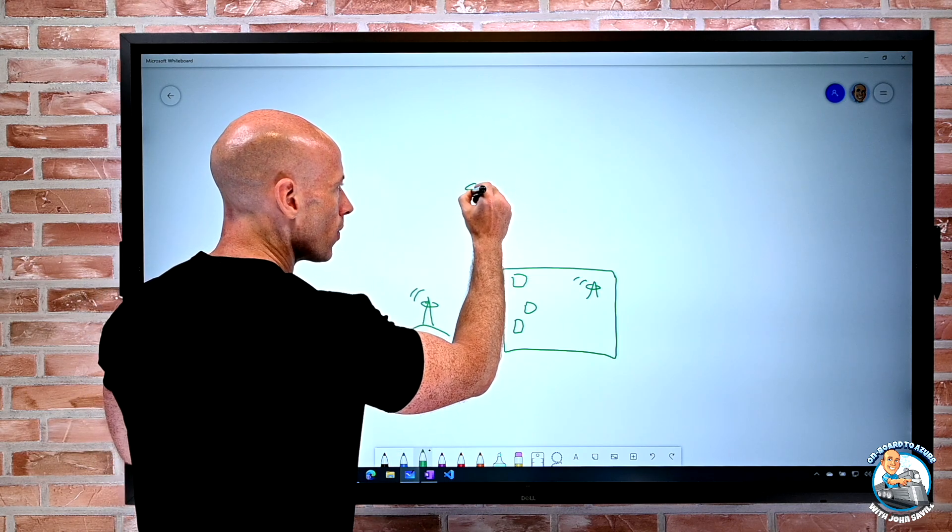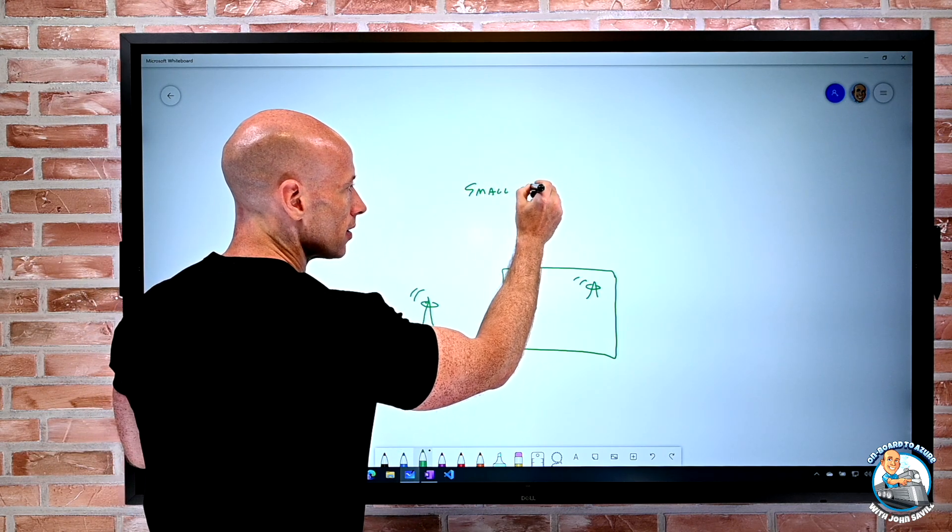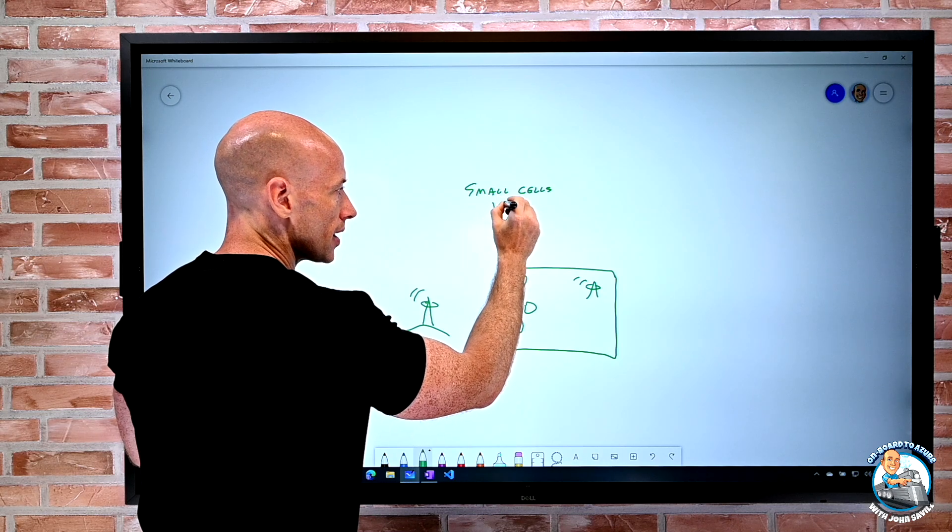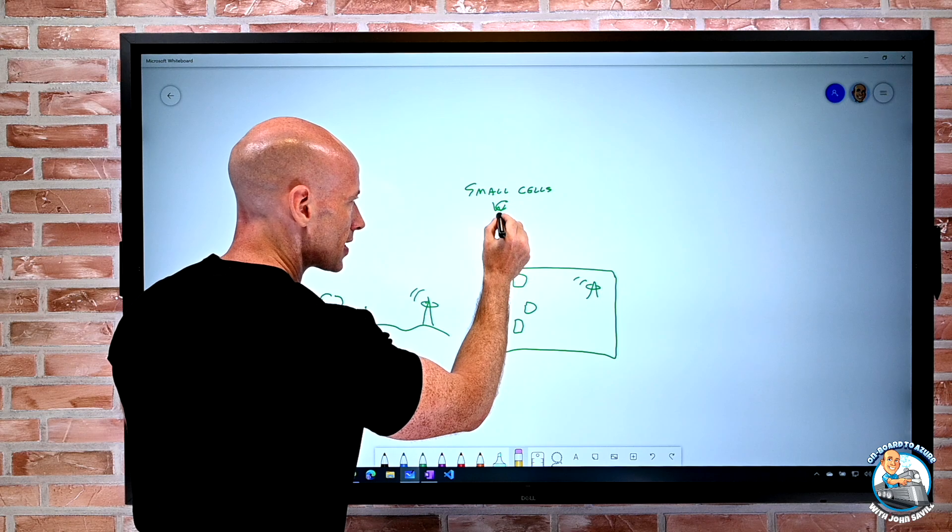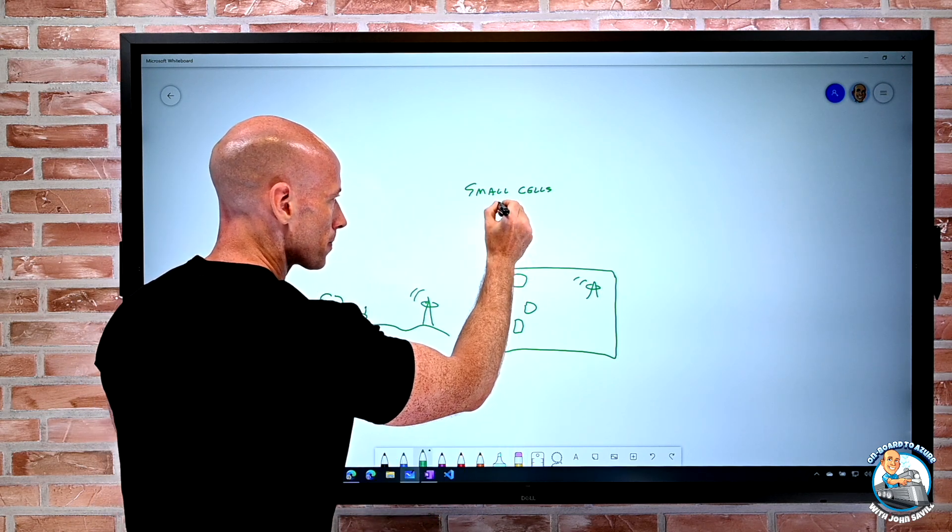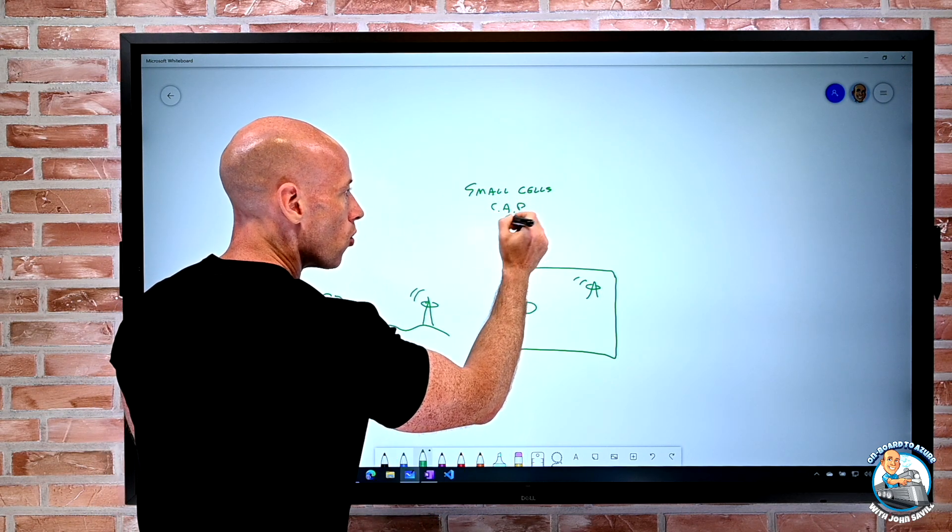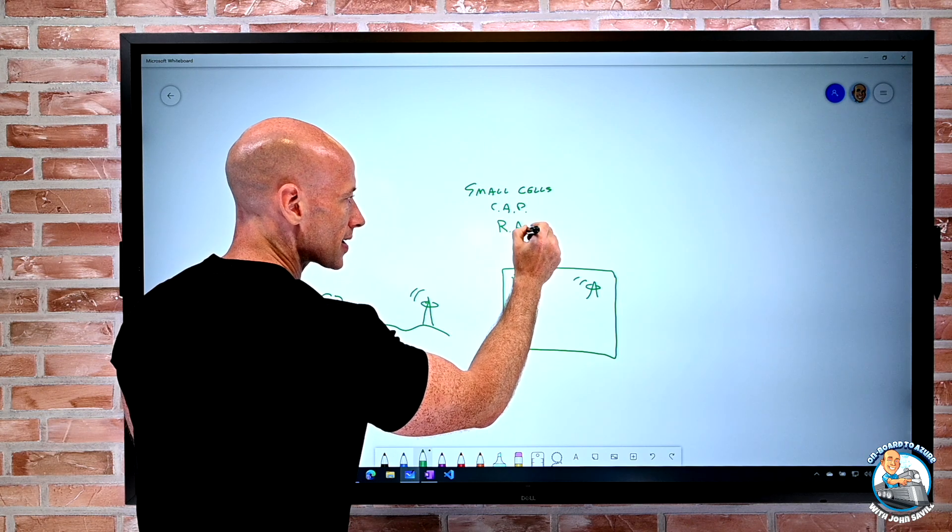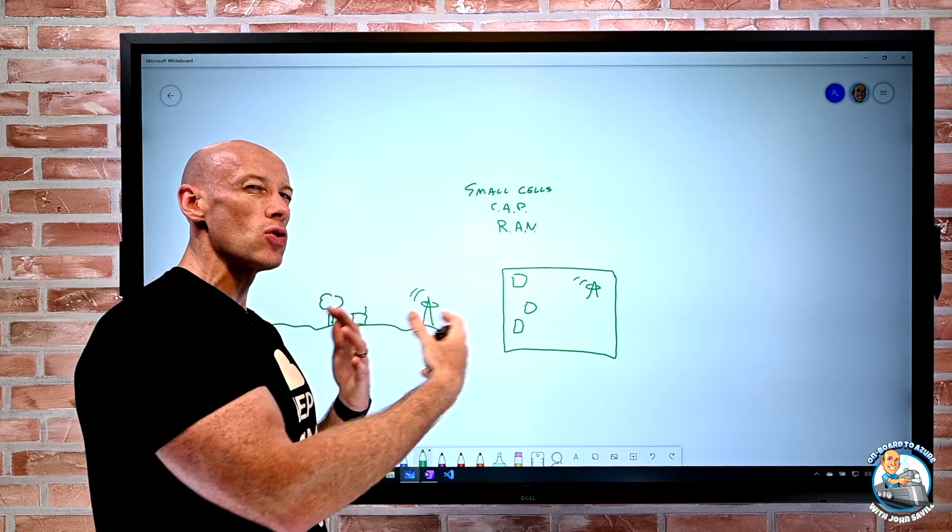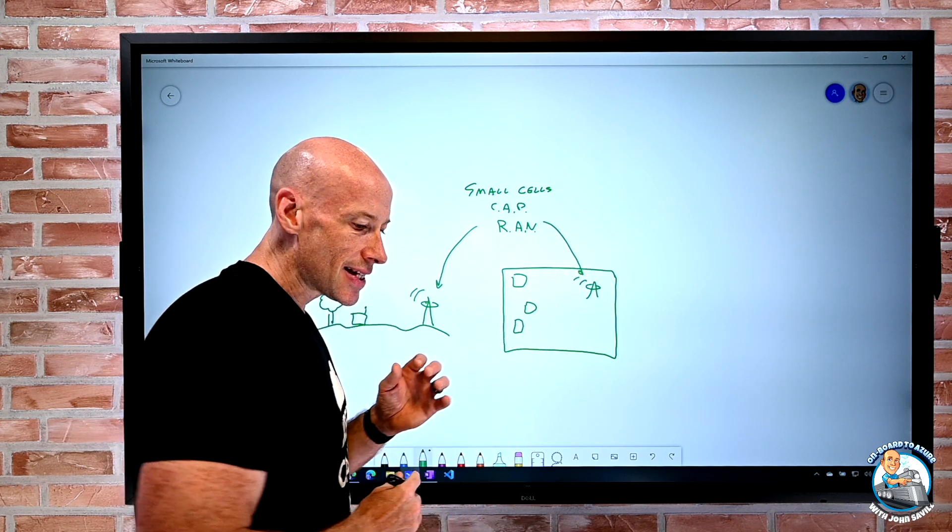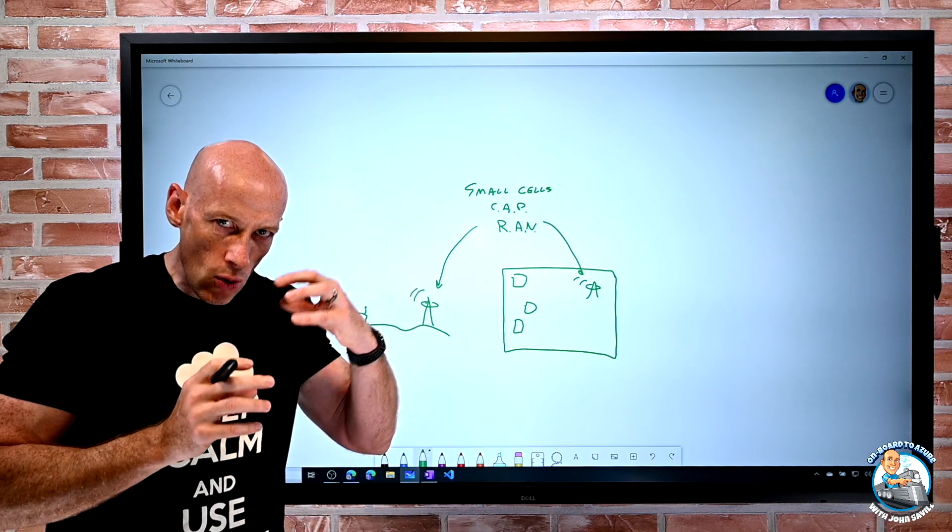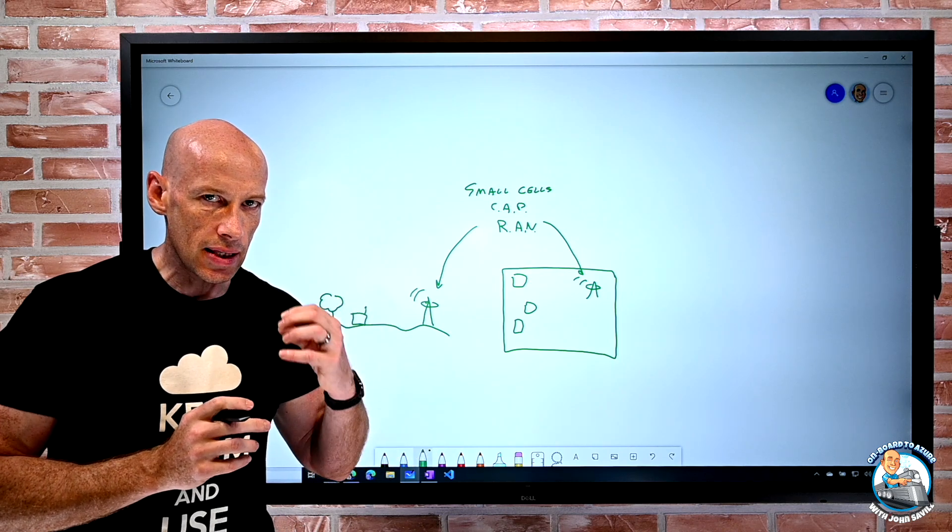So we can think about we have these small cells, you might call them the cellular access points, or again the radio access networks. They're all used interchangeably. So these are these antenna but they're also other components that make these work.